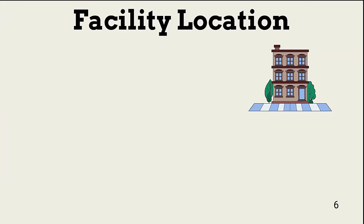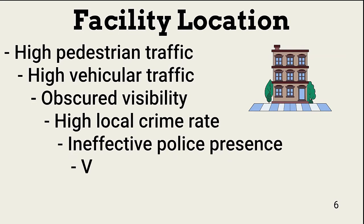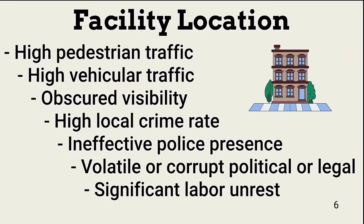The largest security zone is the facility site. The site might include one or more buildings and other structures. One of the biggest rules a policy should cover is reasonable and appropriate site locations. Things to consider when determining where to place a facility include high pedestrian traffic, high vehicular traffic, obscured visibility, high local crime rate, ineffective or rare police presence, local governments and courts that are not always aligned with the law and what is ethical, and significant labor unrest. Placing a facility where overall risk is acceptable is the first step in securing it.